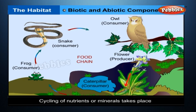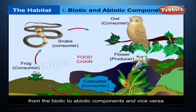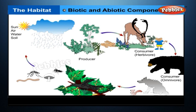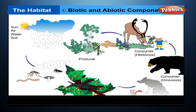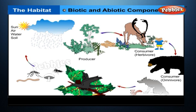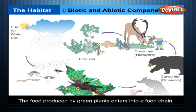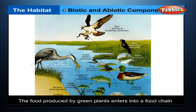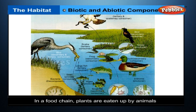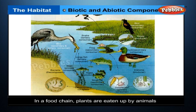Cycling of nutrients or minerals takes place from the biotic to abiotic components and vice versa. This cycling is made possible through the activity of microorganisms, which act as decomposers of dead and decaying matter. The simpler substances produced are taken up by green plants through the soil and the air. The food produced by green plants enters a food chain, in which plants are eaten by animals, thus making animal life possible.